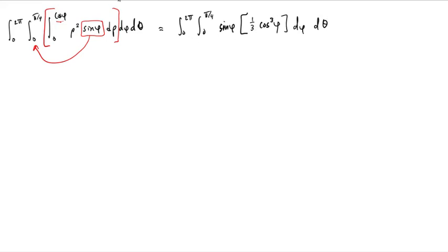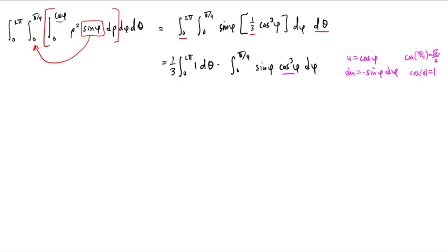This 1 third can come out. Now this integral is separable because there are no thetas at all in this integral. So the theta and the 1 third can come out. This can be written as 1 third integral 0 to 2 pi, 1 d theta, times integral 0 to pi over 4, sine of phi cosine cubed phi d phi. And of course this can be done by u sub. U is cosine phi, du is then minus sine phi d phi. And we can plug in the boundaries. Cosine of pi over 4 is root 2 over 2. Cosine of 0 is 1. And the negative sign flips this. And so what we end up with is 2 pi over 3 times the integral root 2 over 2 to 1 of u cubed du.